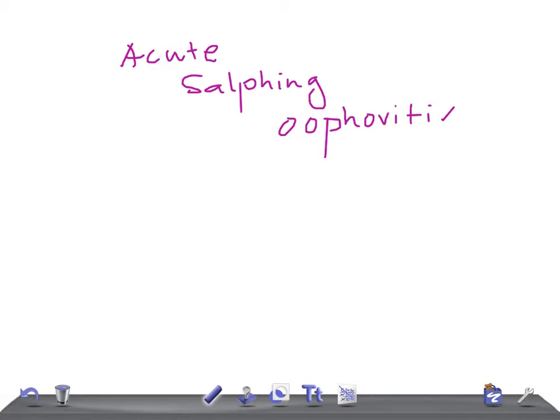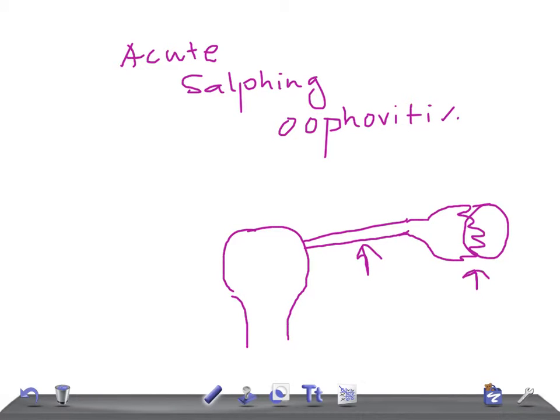If this is the uterus, this is the fallopian tube, and there goes the ovary. So infection of this and this - the fallopian tube and ovary.